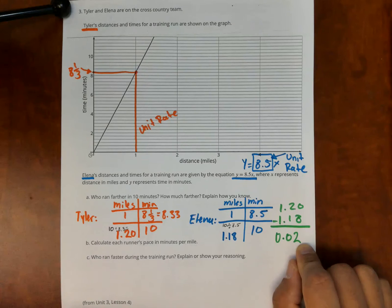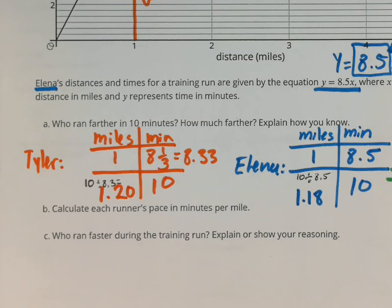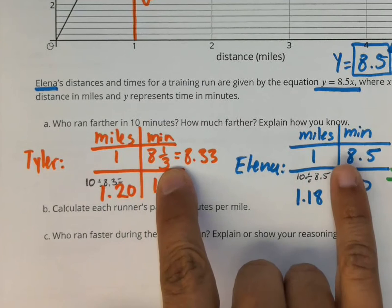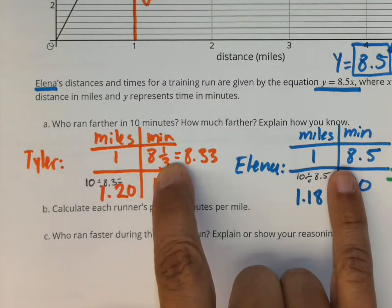Now part B, we already kind of, we did the answer there, calculate each runner's pace in minutes per mile. So when we did the unit rate here, that's what we did there, minutes per mile. So how many miles they run? One. And then how many minutes it takes. So it takes Tyler eight and a third minutes to run the mile. And it takes Elena eight and a half minutes to run the mile.